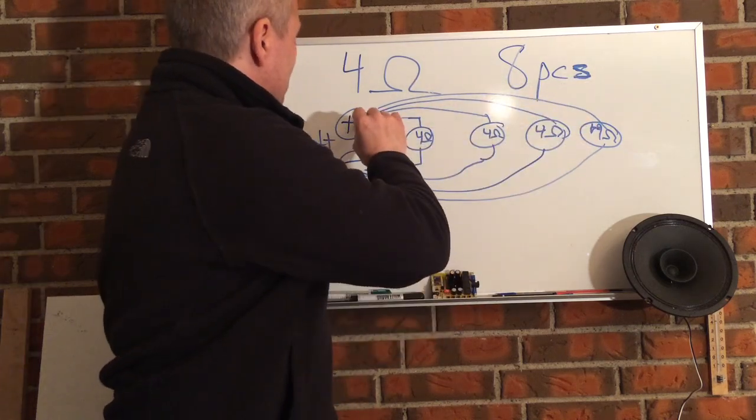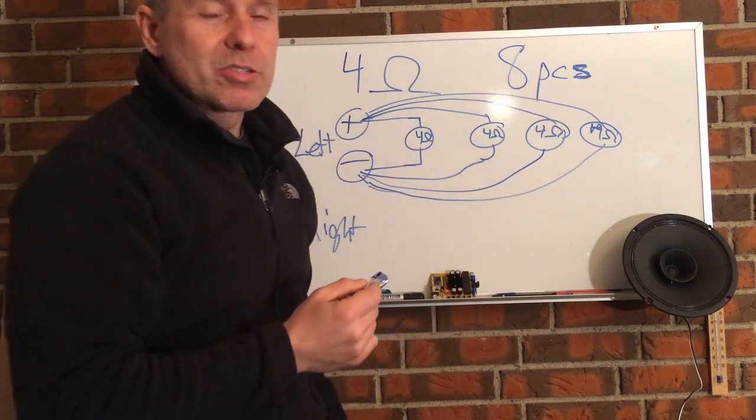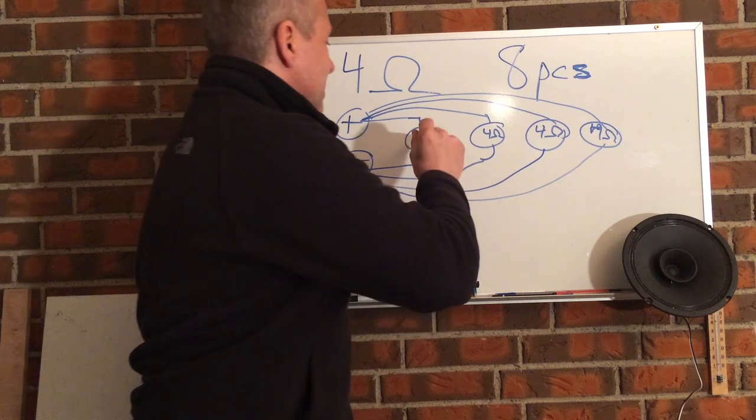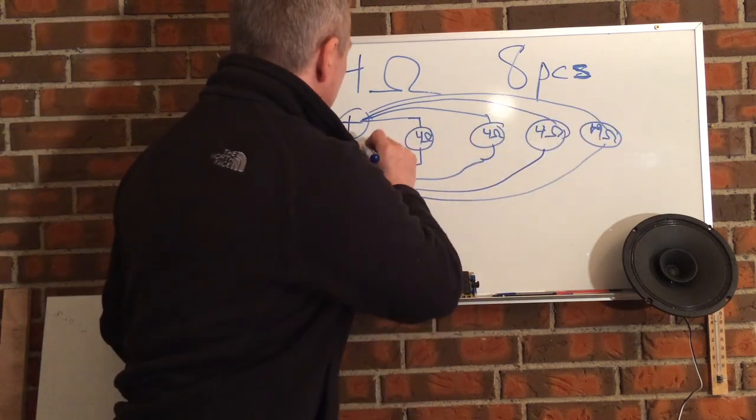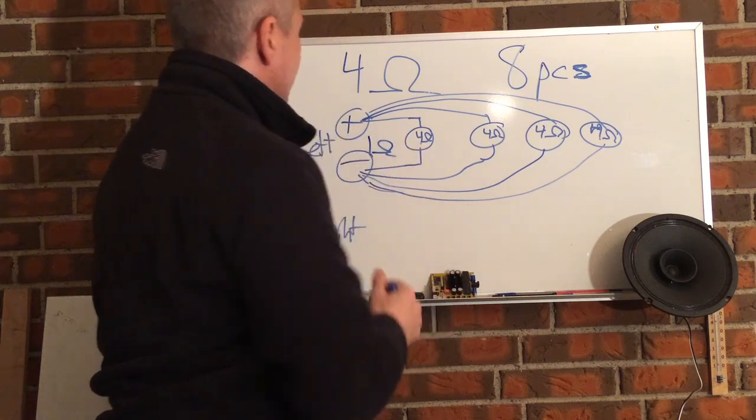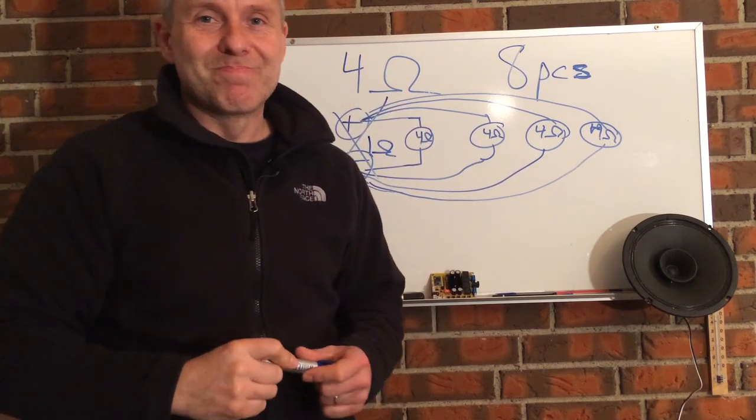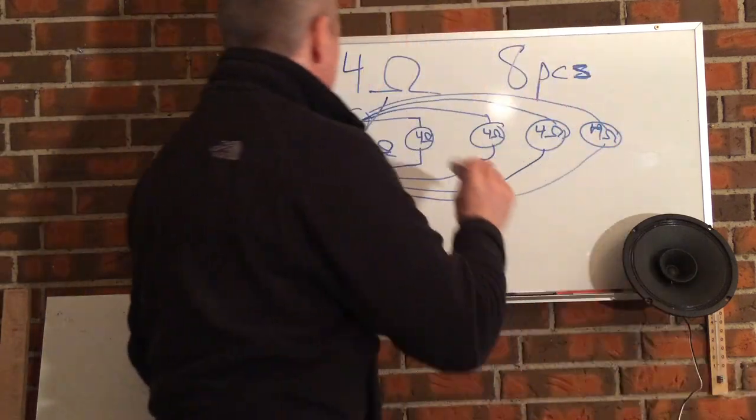So now it's four times easier for getting from plus to minus for the electrons going into the circuit. So what that does is, actually since these are all now in parallel, so this circuit is now one ohm to the amplifier. So how do you do it, how would you do this then?